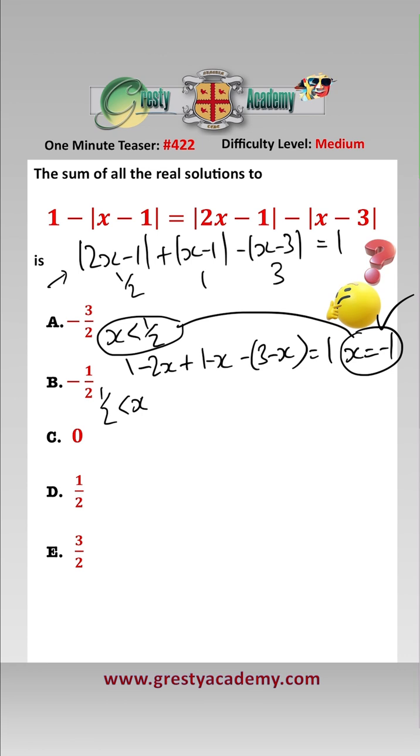The next region we have to look at is x between a half and 1. Now this equation becomes 2x minus 1 add 1 minus x minus 3 minus x equals 1, and the solution to that is x equals 2. However, that is not in that range, so that is not a legitimate solution.